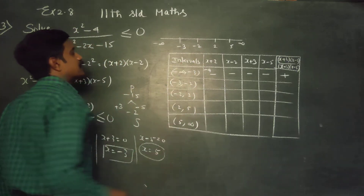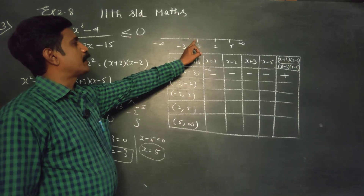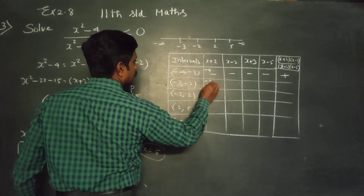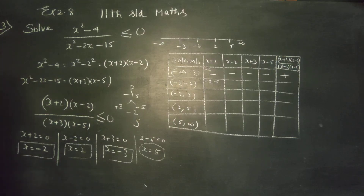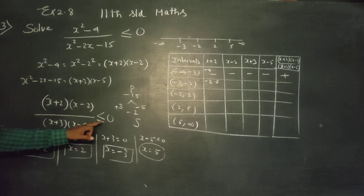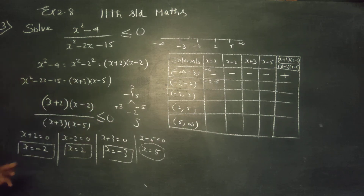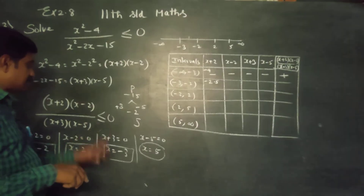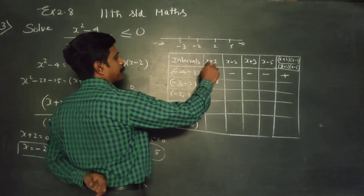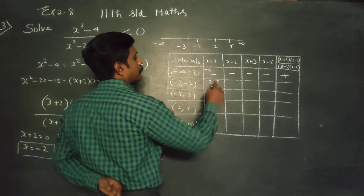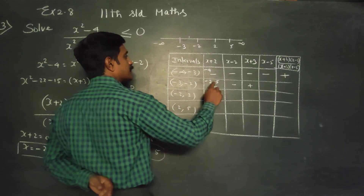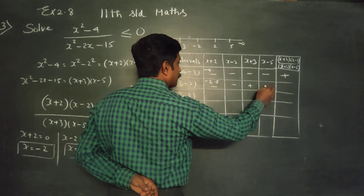For the interval minus 3 to minus 2, the test point is minus 2.5. Minus 2.5 plus 2 is negative, minus 2.5 minus 2 is negative, minus 2.5 plus 3 is positive, minus 2.5 minus 5 is negative. The result is negative, so this interval is allowed.